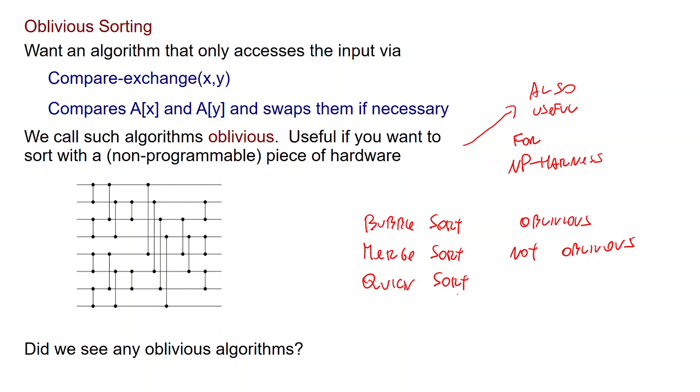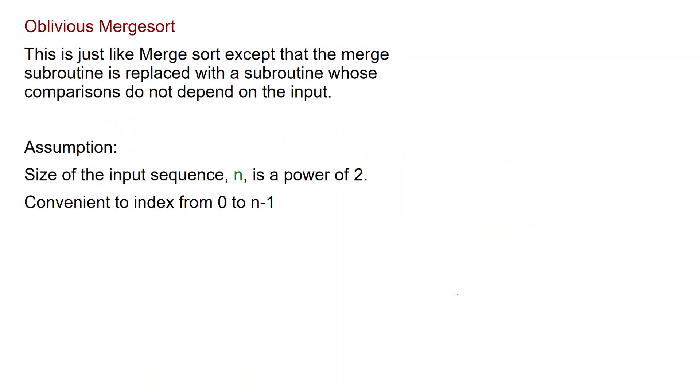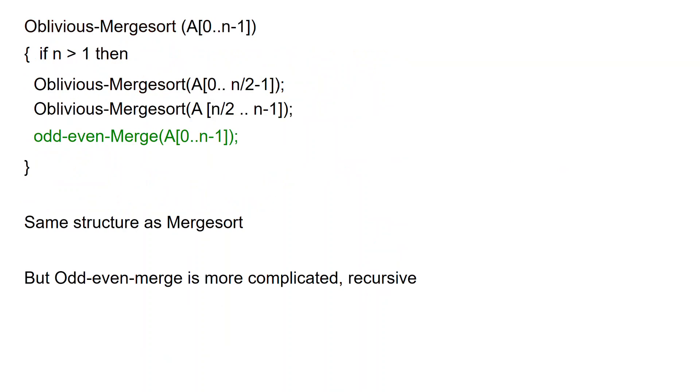So how do we have an Oblivious sorting algorithm? Well, there is a variant of merge sort which is called Oblivious merge sort which is just like the merge sort algorithm except that the merge subroutine is replaced with a different subroutine whose comparisons, again as required, do not depend on the input. Let's see how it works. It's convenient for the exposition to assume that the size of the input n is a power of 2 and also to index the elements from 0 to n-1.